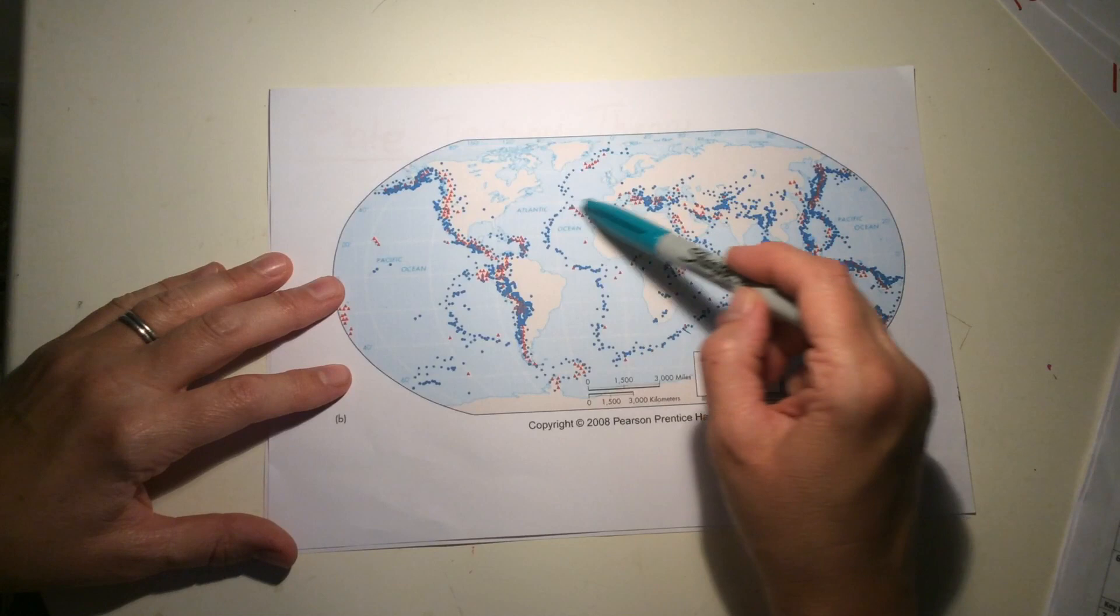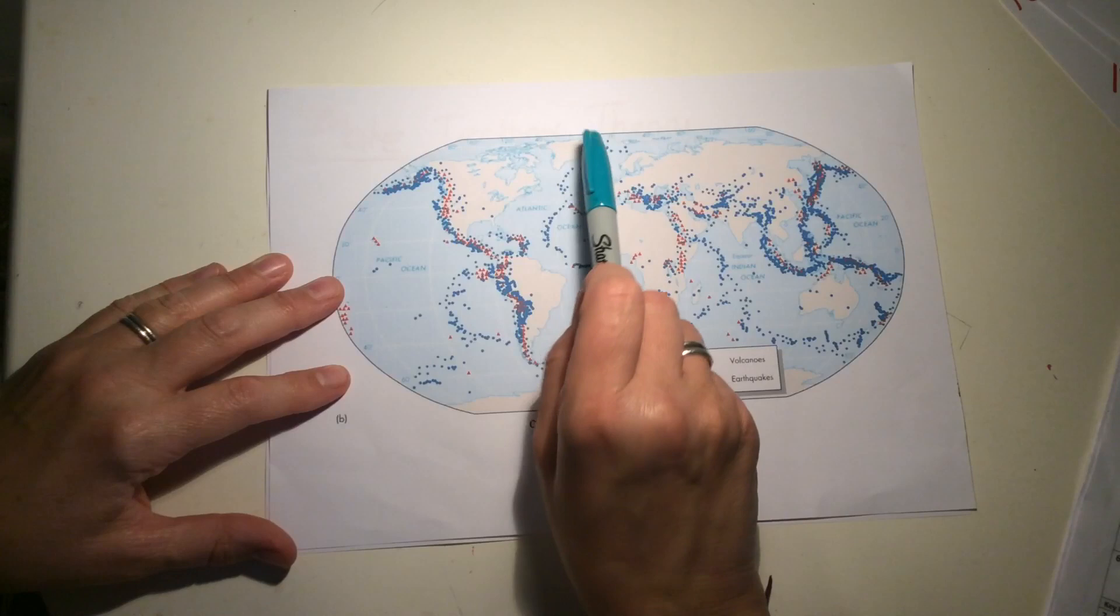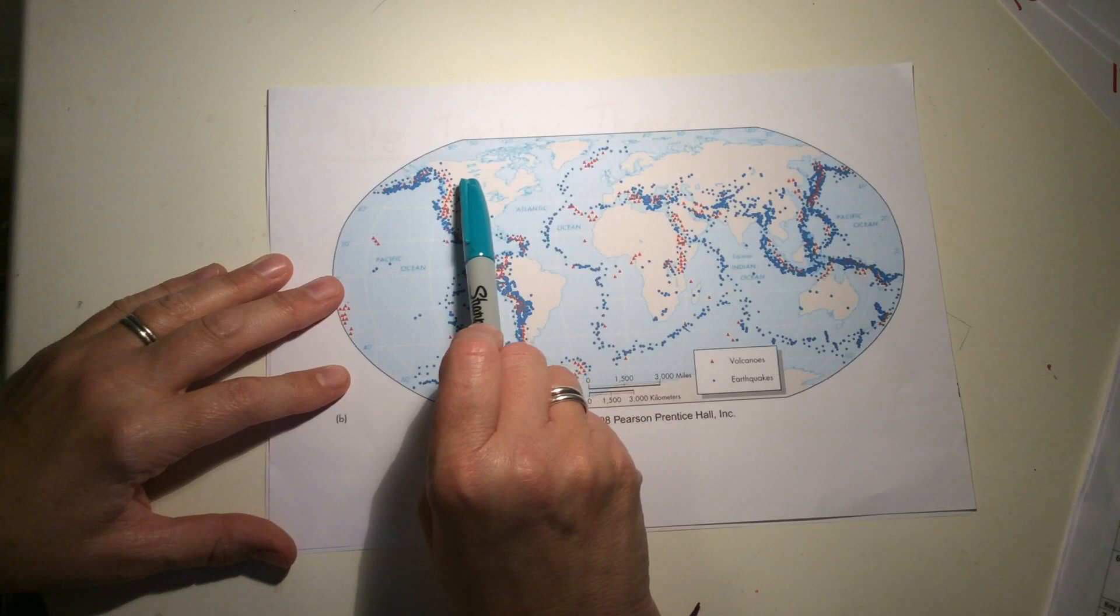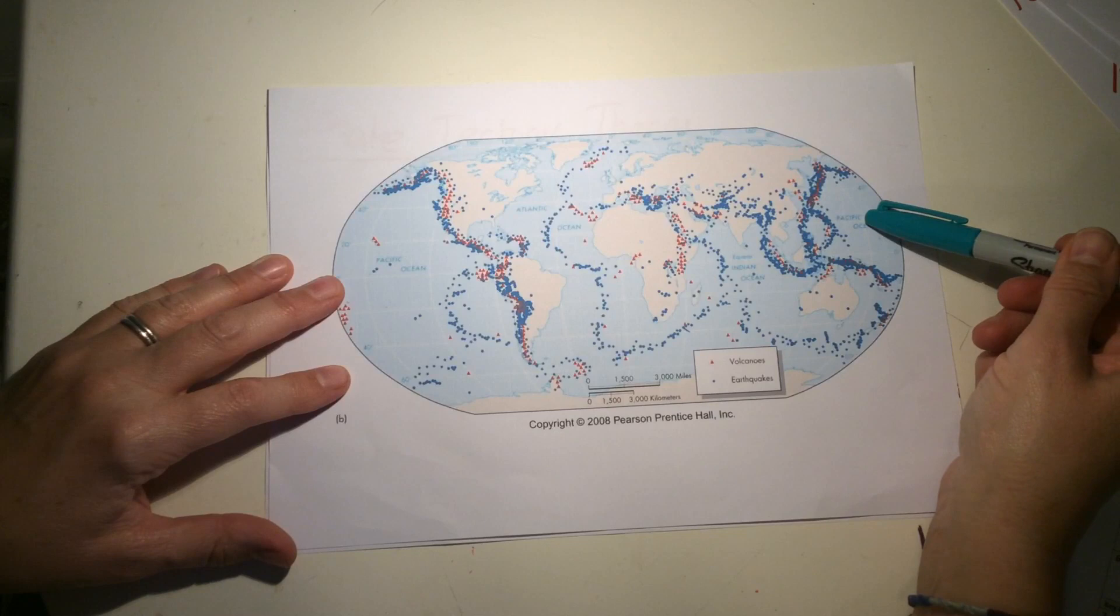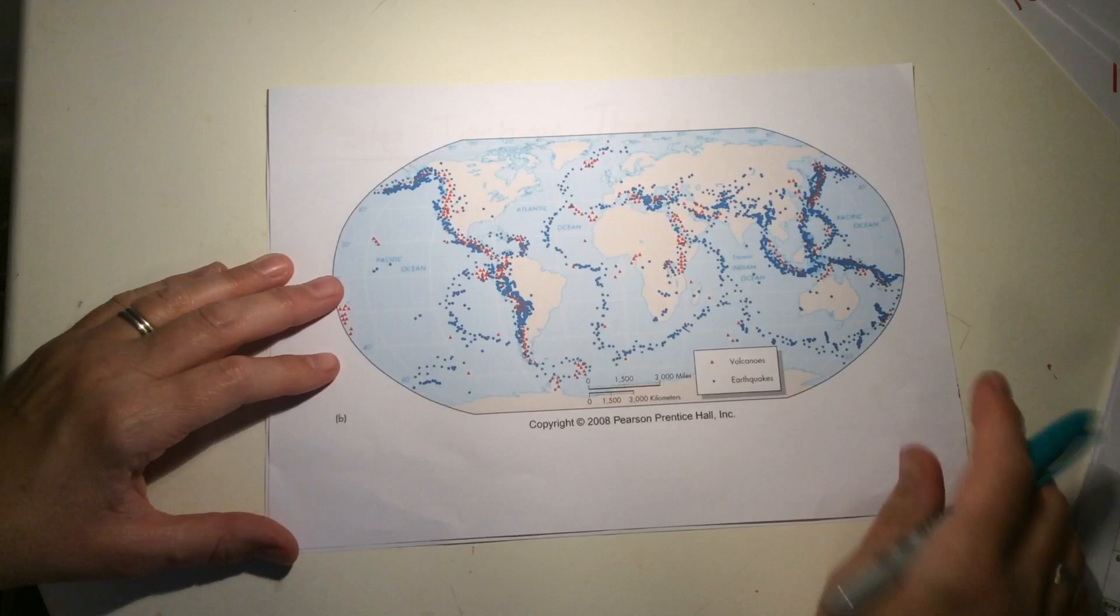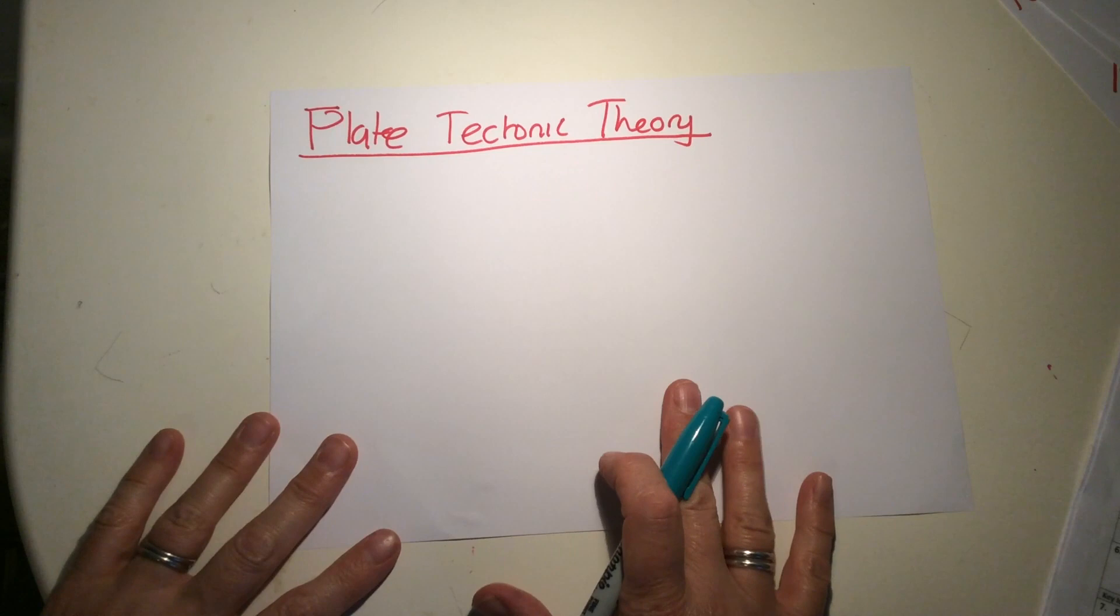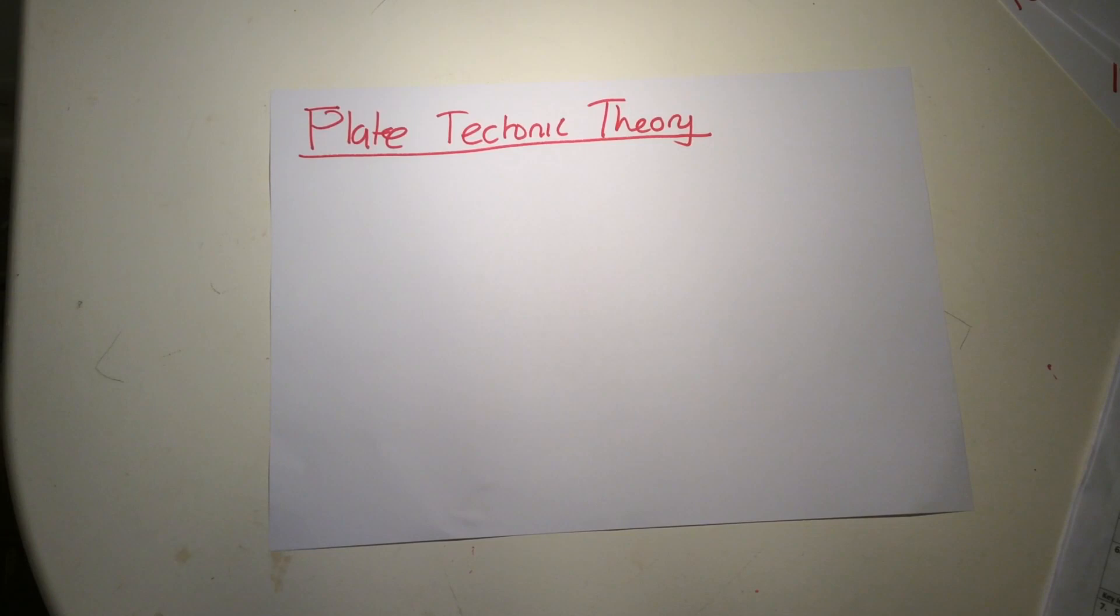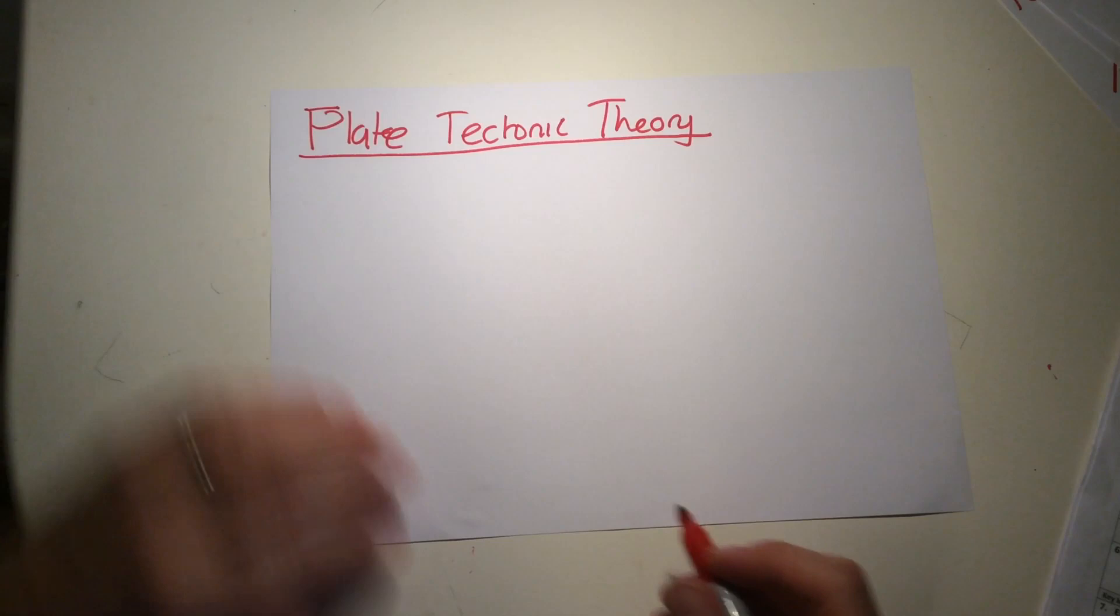This piece of crust here that we're on—the Eurasian Plate—is moving very slowly that way. This piece, the North American Plate, is moving very slowly this way. The Pacific Plate is moving this way. There's a massive amount of movement, and the plate tectonic theory tells us why. This will form the basis of all your answers on physical processes, because without this theory nothing else makes sense. This is the underlying reason why plates move.